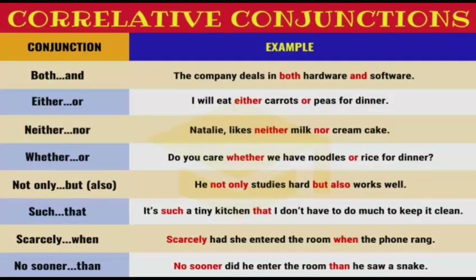Here are some examples. For 'both...and': 'The company deals in both hardware and software.' For 'either...or': 'I will eat either carrots or peas for dinner.' For 'neither...nor': 'Natalia likes neither milk nor cream cake.' For 'whether...or': 'Do you care whether we have noodles or rice for dinner?'